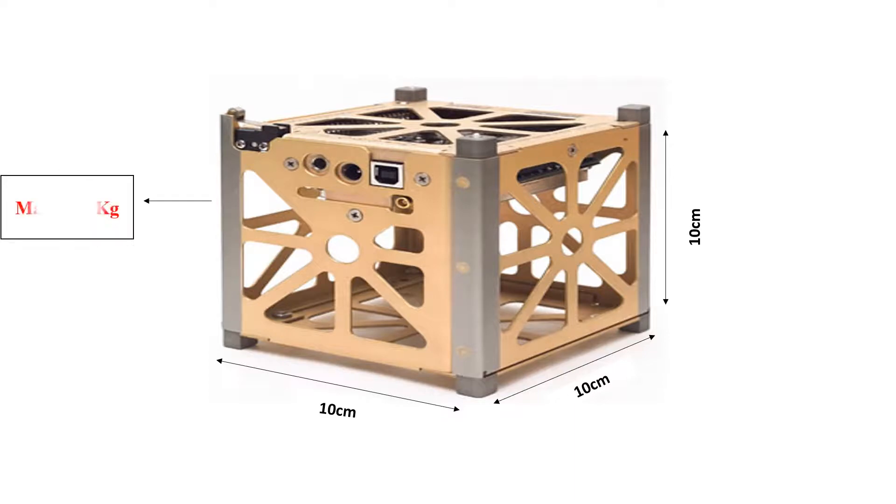The standard size of a CubeSat is 10x10x10cm with a mass less than 1.3kg, and this smaller size is known as a 1U CubeSat.